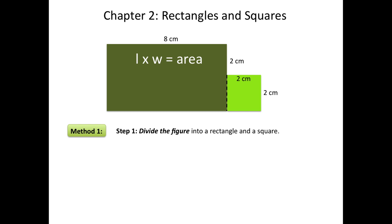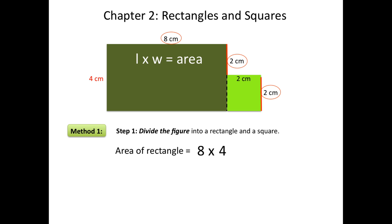We want to begin by finding the area of the rectangle. In order to find the area of the rectangle, we have to identify first the length and the width. The length is 8 centimeters long. Now we have to find the width. To find the width, we have to take a look at the information given. The width is split into two parts — we need to add these two parts together to find the width of the rectangle. The width of the rectangle is 4 centimeters. The area of the rectangle is then 8 times 4, or 32.